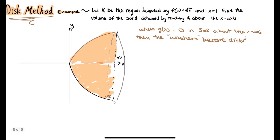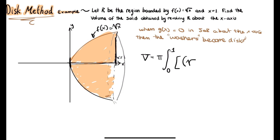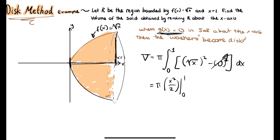Using the disk method: v equals pi times the integral from 0 to 1 of square root of x squared minus 0 squared dx, since g of x is 0, the x-axis. We can ignore the zero term. Evaluating gives pi times x squared over 2 from 0 to 1, which equals pi over 2. That is the disk method — it's pretty much the same as the washer method, just with g of x equal to zero.